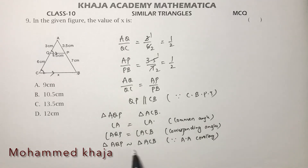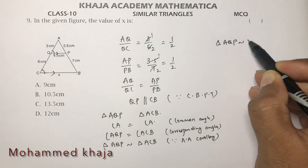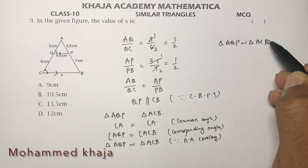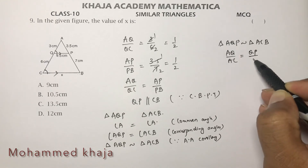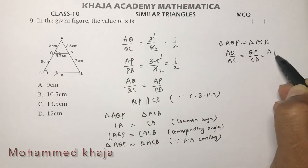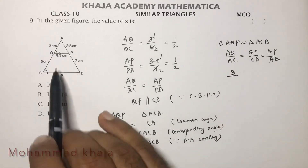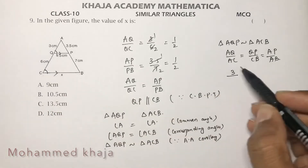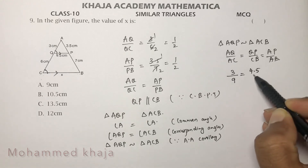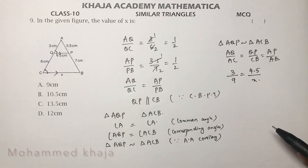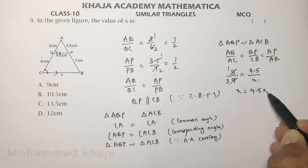Since triangle AQP is similar to triangle ACB, we write the sides proportionally: AQ/AC = QP/CB = AP/AB. AQ = 3, AC = 3 + 6 = 9, and QP = 4.5, CB = X. So: 3/9 = 4.5/X.